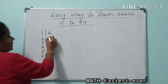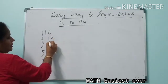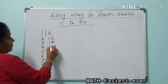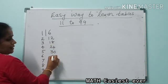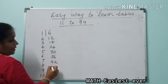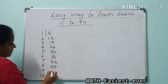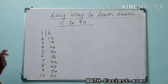Now 6 table: 6 ones is 6, 6 twos are 12, 6 threes are 18, 6 fours are 24, 6 fives are 30, 6 sixes are 36, 6 sevens are 42, 6 eights are 48, 6 nines are 54, 6 tens are 60.